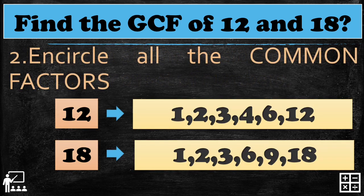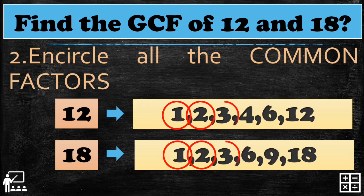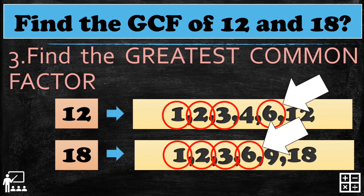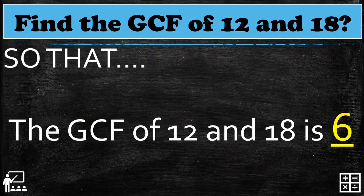Step 2: encircle all the common factors. The common factors of 12 and 18 are 1, 2, 3, and 6. Step 3: find the greatest common factor. The greatest common factor of 12 and 18 is 6. So the GCF of 12 and 18 is 6.